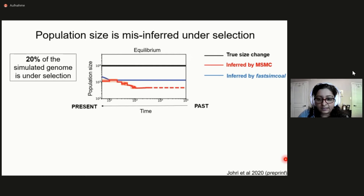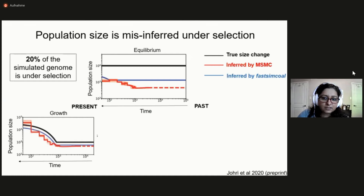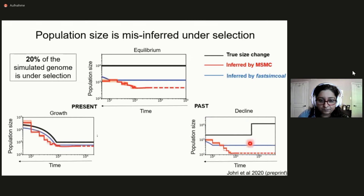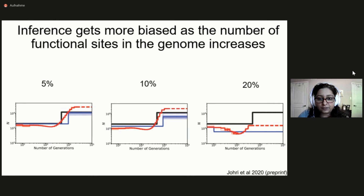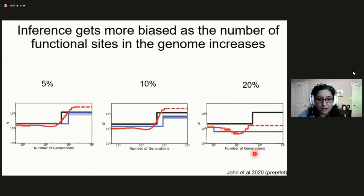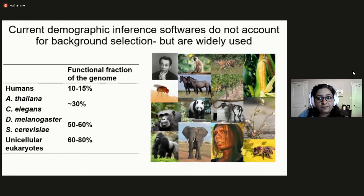Interestingly, when there really is recent growth, inference is pretty accurate. However, if the population has undergone a recent decrease in size — a bottleneck — then there's an inference of an even stronger growth. So it's interesting to see that different demographic histories produce a different extent of linked selection and therefore different extent of misinference. These observations strongly suggest the need for jointly estimating these two evolutionary forces. As one would predict, the higher the proportion of functional sites in the genome, the stronger is the misinference of demographic history. If only 5% to 10% of the genome was functional, inference was pretty accurate, but once 20% of the genome was functional, there was a pretty strong misinference.